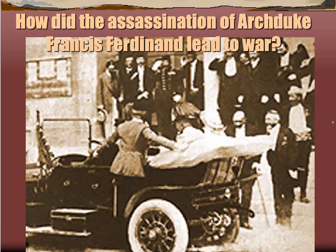How did the assassination of Archduke Franz Ferdinand lead to war? Franz Ferdinand was the heir to the Austrian throne — the oldest brother of the Austrian emperor. With the annexation of Bosnia, he was sent to Sarajevo, the capital of Bosnia, to commemorate the annexation. He went on a tour through Sarajevo, and the parade route was actually published in the newspapers, which was a rather foolish thing to do.